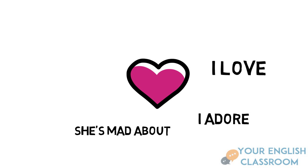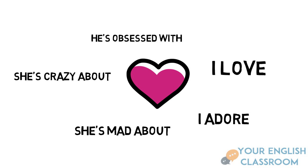You can also say 'she's mad about' — she's not actually mad, it just means she likes that thing a lot. We could also say 'she's crazy about.' And we can say 'he's obsessed with' or 'she is obsessed with' — again, a replacement for love.